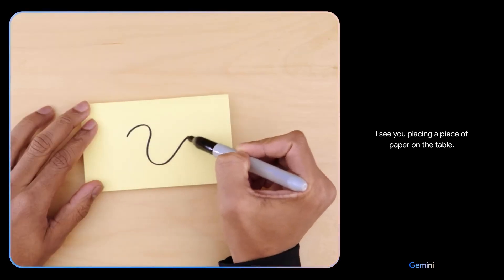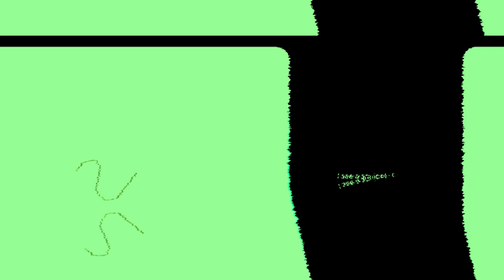Here we go. Tell me what you see. I see you placing a piece of paper on the table. I see a squiggly line.